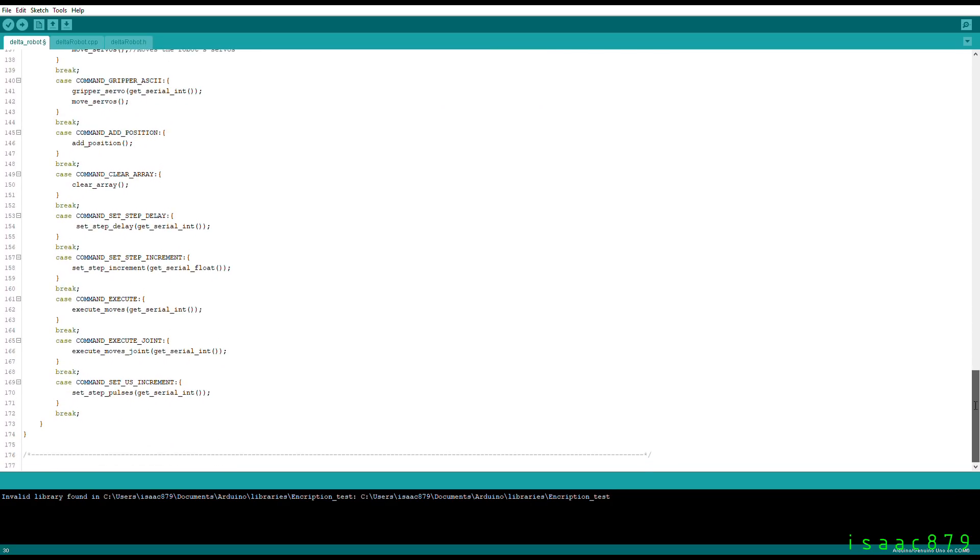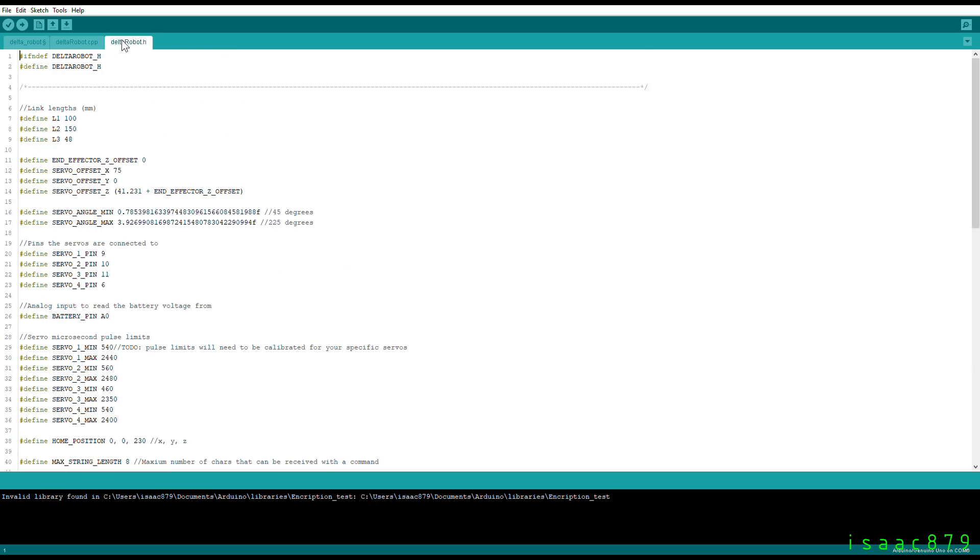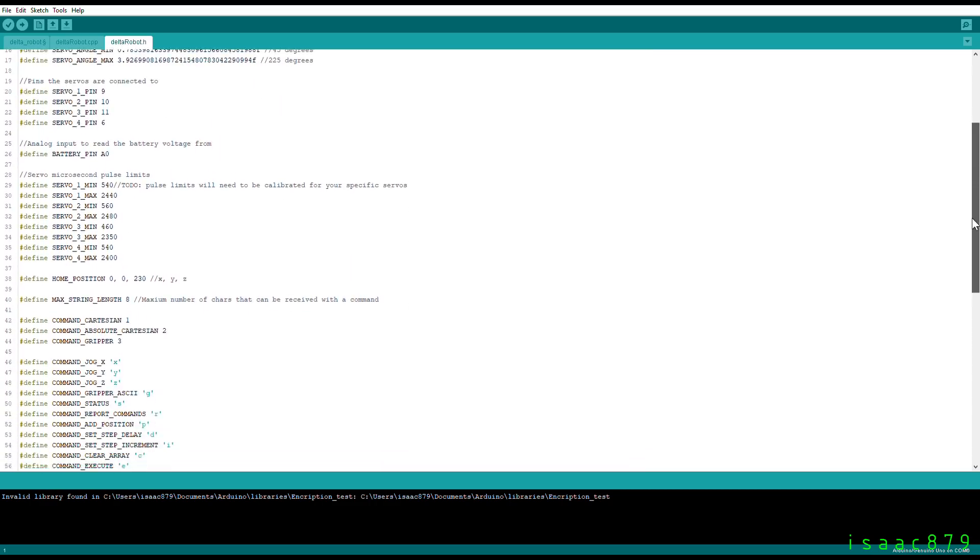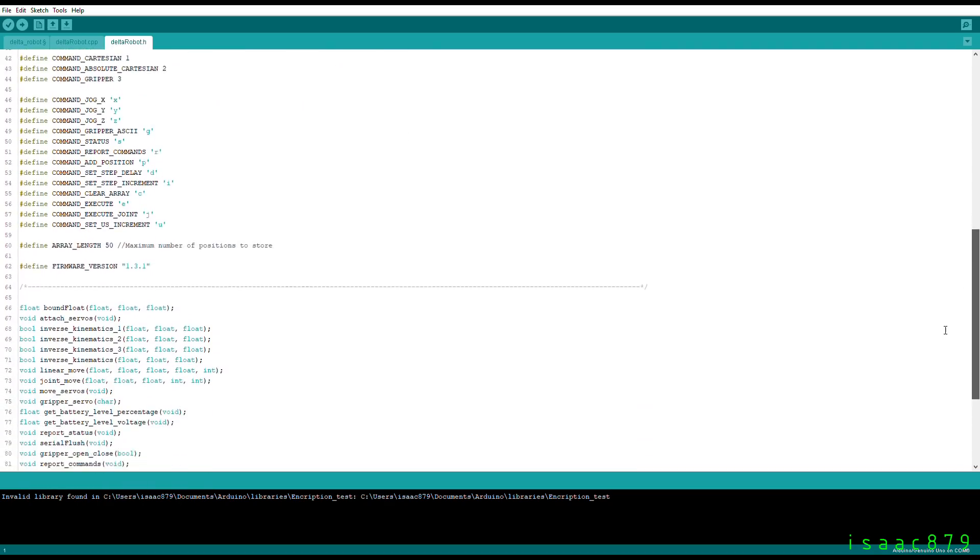There are three files for this project, the main.ino, the C++ source file, and the corresponding header file. The header file contains all the defines and function prototypes. The C++ source file contains all the functions that actually make the robot work.